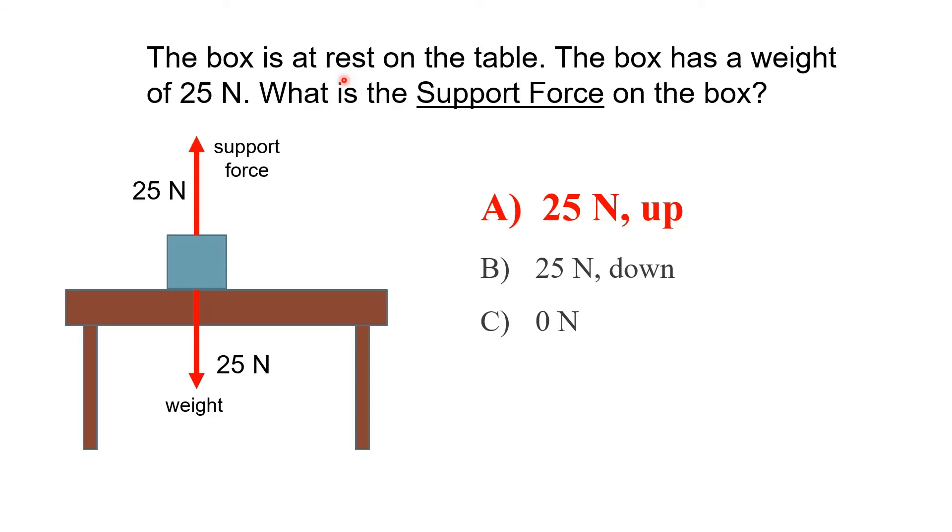There's only one force because it's only interacting with one object. So to get a net force of zero, the support force has to be opposite but equal in magnitude. So it's going to be up.